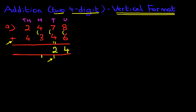Now we've got the hundreds. We've got 4 plus 3. What is 4 plus 3? The answer is 7. But don't forget the one here. 7 plus 1 is 8.